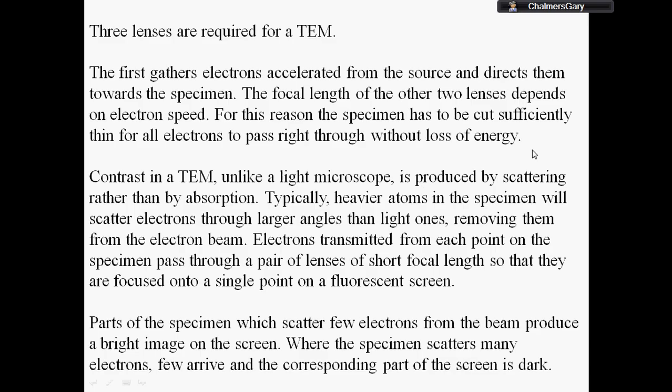So that is basically how they work. But just to summarize, the first lens gathers electrons accelerated from the source and directs them towards the specimen. The focal length of the two other lenses then depends on the electron speed. For this reason the specimen has to be cut significantly thin for all electrons to pass right through without any loss of energy.